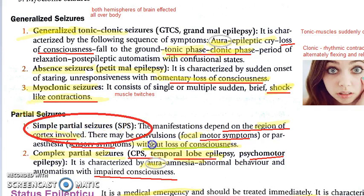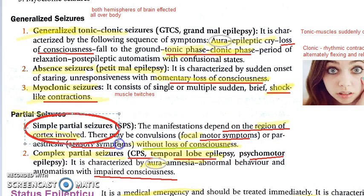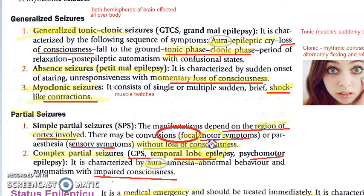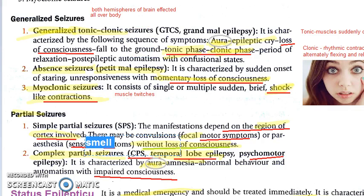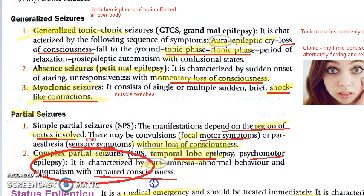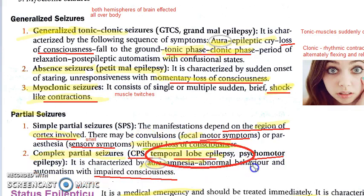In simple partial seizures, manifestations depend on the region of the cortex involved. There can be motor symptoms or sensory symptoms, but there is no loss of consciousness. Sensory symptoms could include strange sensations of smell. In complex partial seizures, there is impaired consciousness, and the temporal lobe is probably affected — it is also called temporal lobe epilepsy or psychomotor epilepsy.